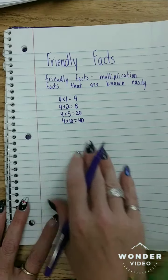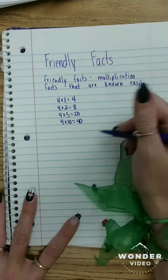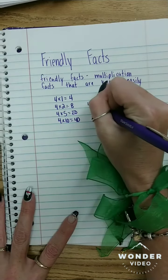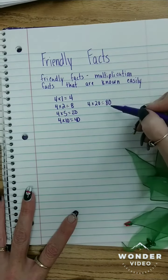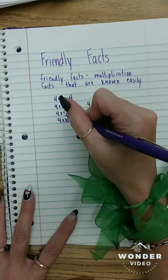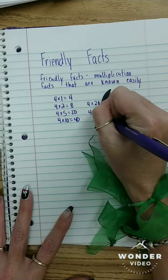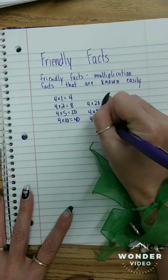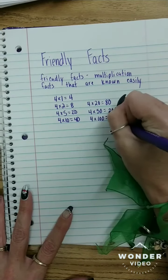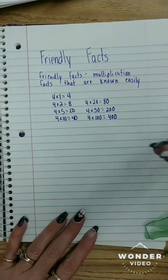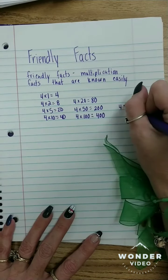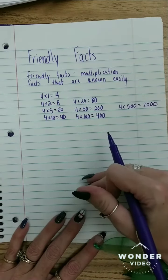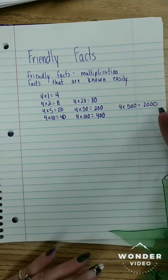So these are our general friendly facts from our zero to twelves tables, but we also need to know the multiples of that. So if I know four times two is eight, well four times 20 is 80. I know that it's four times two and add a place value zero. If four times five is 20, well four times 50 is 200. If four times 10 is 40, well four times 100 is 400. And you can continue to go as high as you need to go. Let's say four times 500, that's 2,000. I might need to go that high, and we use this strategy to help us with those larger dividends.